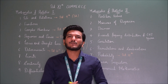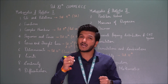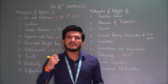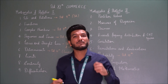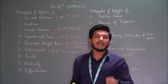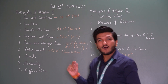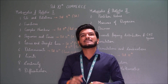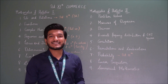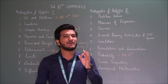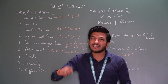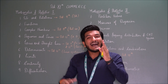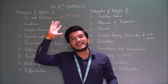In 9th or 10th standard, your maths had Mathematics Part 1 and Mathematics Part 2. Part 1 dealt more with algebra, Part 2 dealt more with geometry. Now in commerce, the subject names are Mathematics and Statistics Part 1 and Mathematics and Statistics Part 2. So a new addition alongside mathematics is statistics.